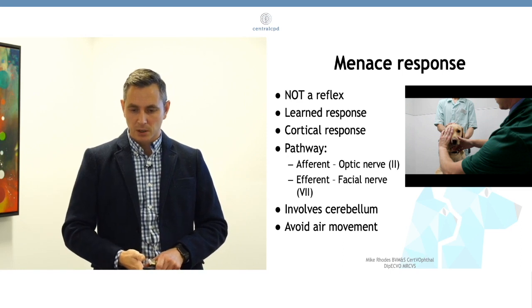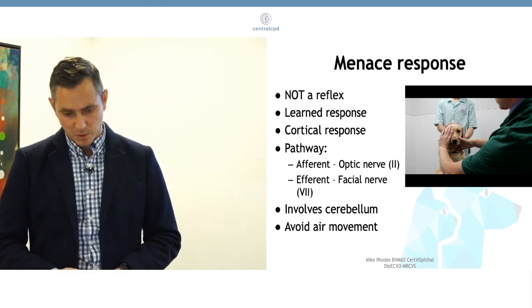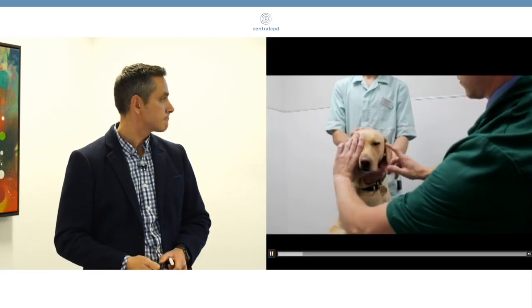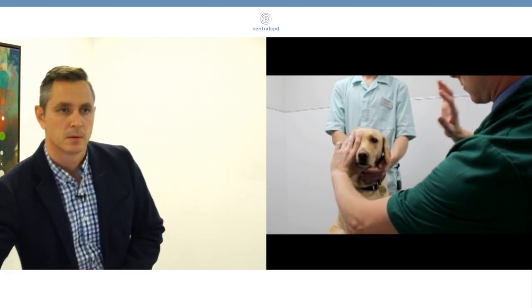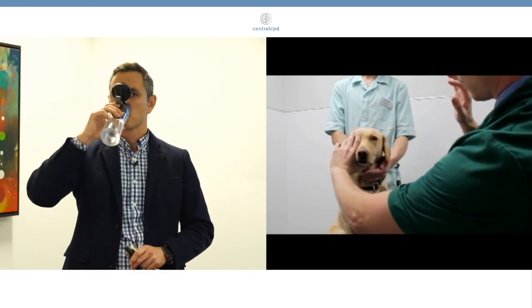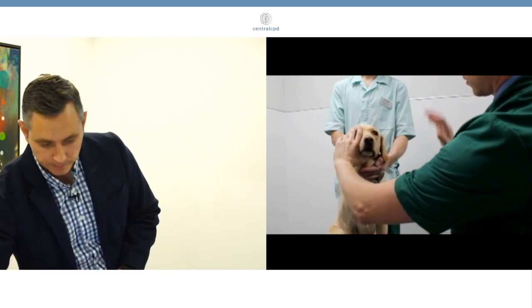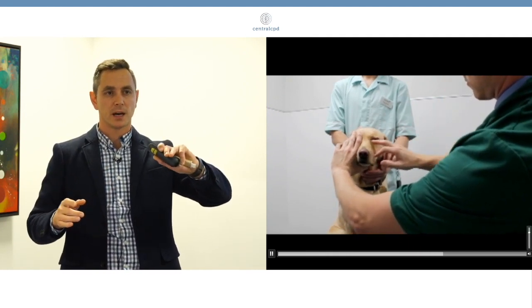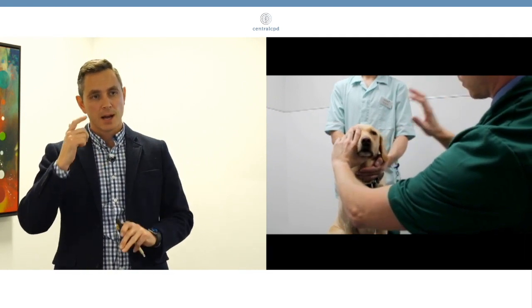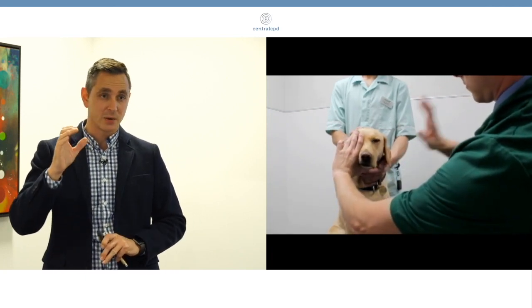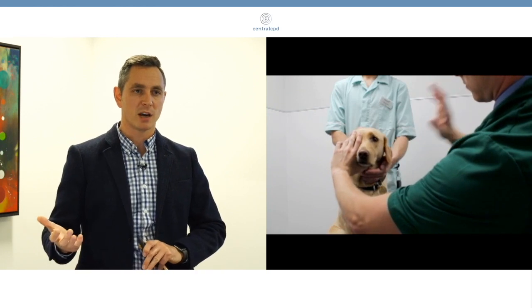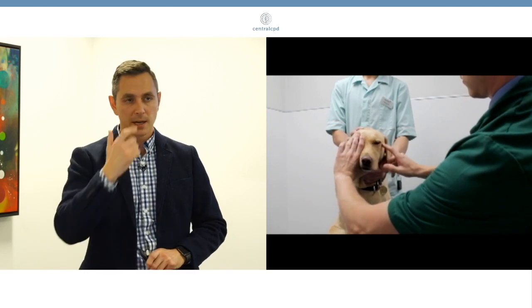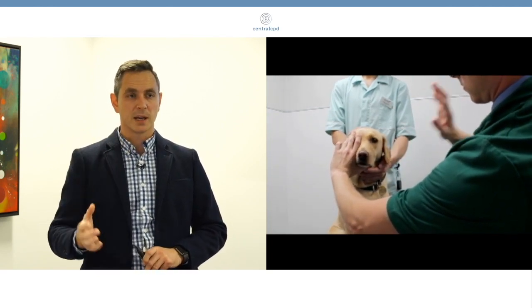So we're just going to run a video now of me doing a menace response. I'm closing off the other eye, so cover the other eye. I'm tapping the medial and lateral skin to ensure the animal can blink. If this dog had facial paralysis, and I'm doing that, it's not blinking, it can't see. Well, it can see, it just can't blink. So I'm assessing first, can the animal blink? It can blink, good.